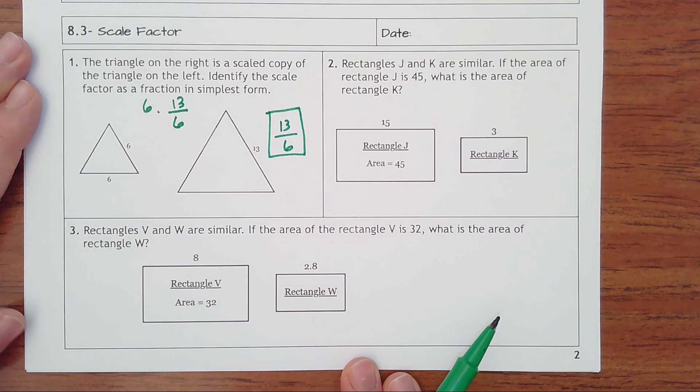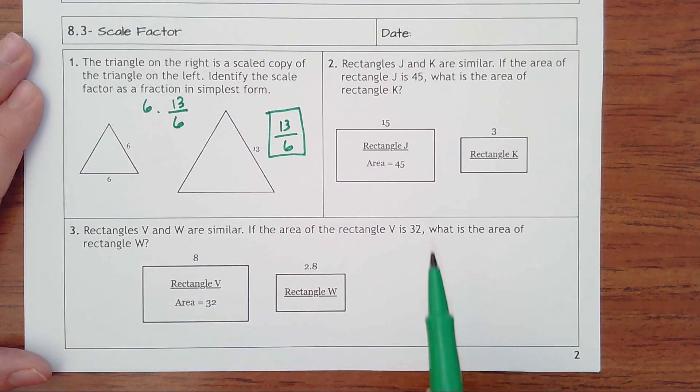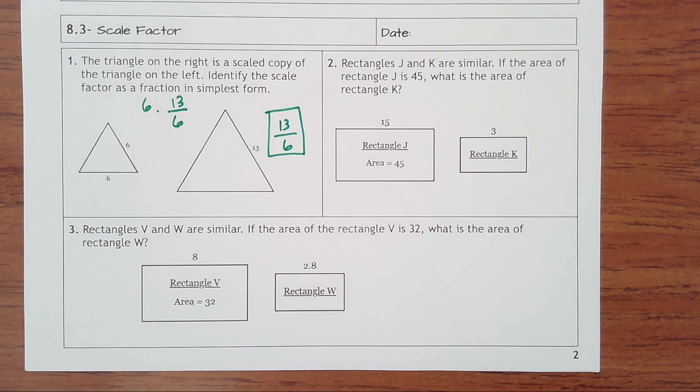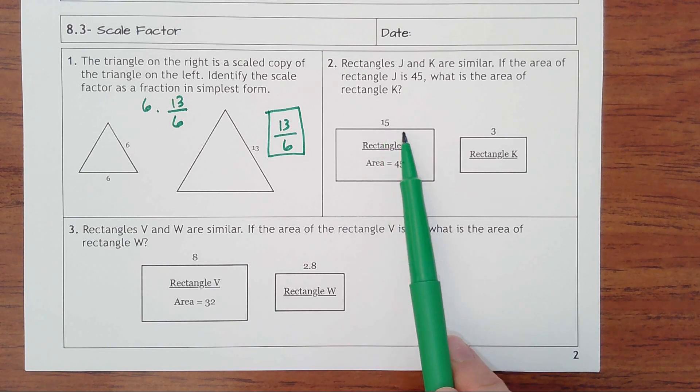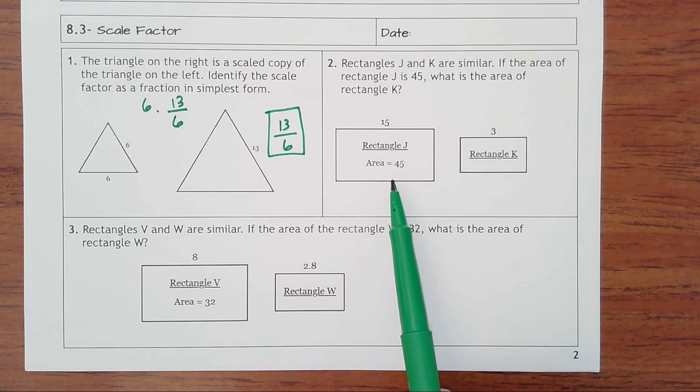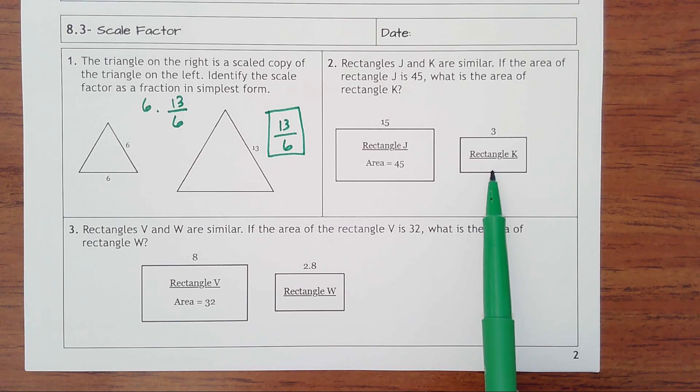Number two, we have two different rectangles that are similar. So that means they're some certain scale factor of one another. If the area of rectangle J is 45, what is the area of rectangle K? And it's very tempting here to see, well, 15 divided by 5 or 15 times a fifth would make 3. So if I just took a fifth of 45, 45 divided by 5 is 9, that would be this area. That's not correct. We can't do that.